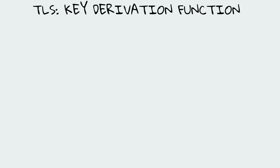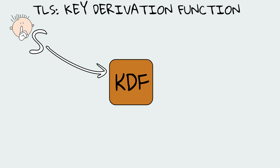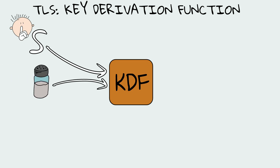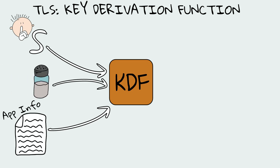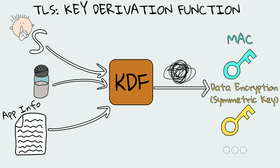In the TLS handshake, the shared secret will be fed into what's called a key derivation function (KDF). The KDF takes as input the shared secret and other params such as a salt and some additional app-specific info. With all these inputs, the KDF will produce many keys — for example the MAC key and the symmetric key used for data encryption.